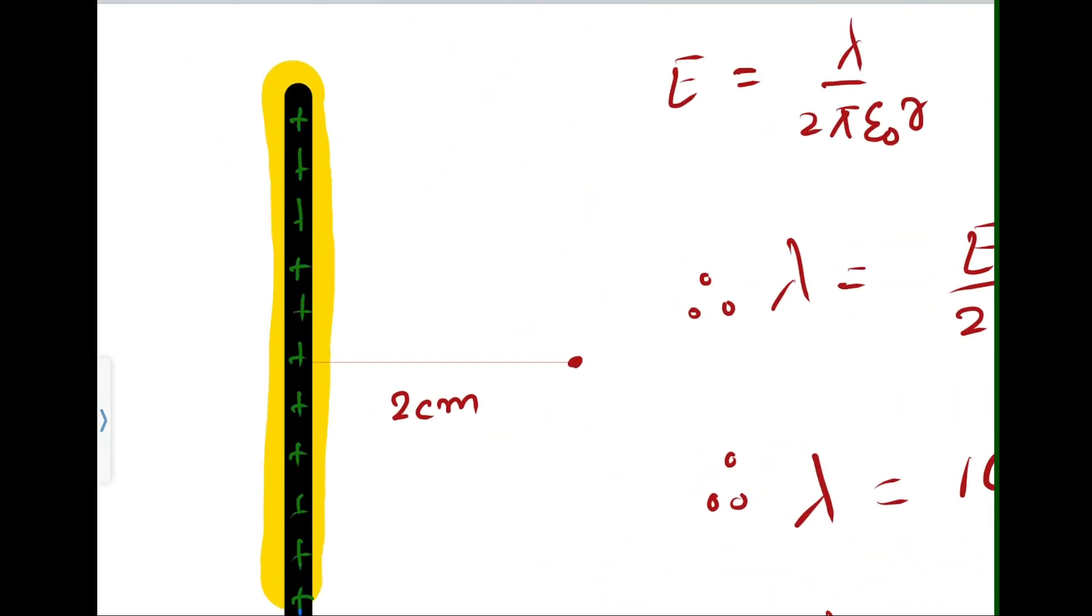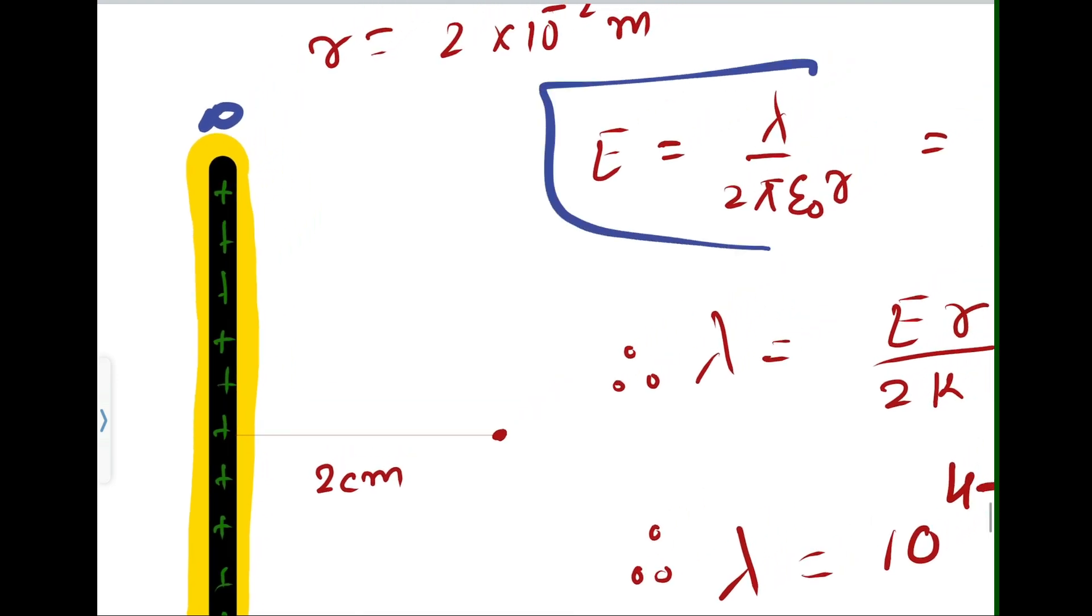So here we have this infinite long rod, right? It is infinite. So for an infinite long rod, we know that the electric field is given by lambda by 2πr epsilon naught.